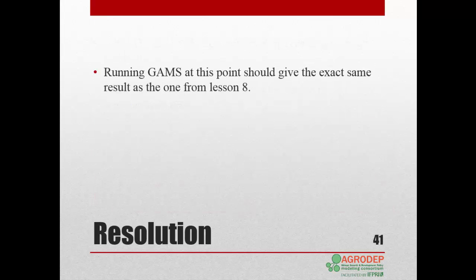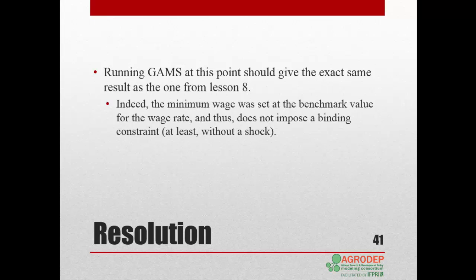Let's take a look at the model in GAMS IDE. At this point, you should obtain the exact same results as in Lesson 8. Why? Because in this first run, we set the minimum wage to the benchmark value for the wage rate, which is 1. The calibration ensures that in the absence of a shock, the model solutions reproduce the benchmark values. So the minimum wage does not impose a binding constraint, at least in the absence of a shock.